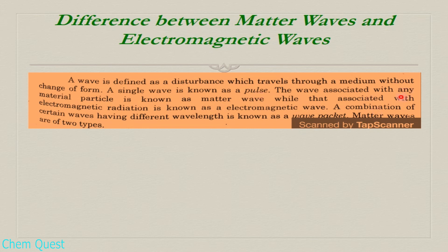The wave associated with any material particle — for example, electron, proton, or neutron — is known as a matter wave, while the wave associated with electromagnetic radiation such as UV or IR radiation is known as an electromagnetic wave.